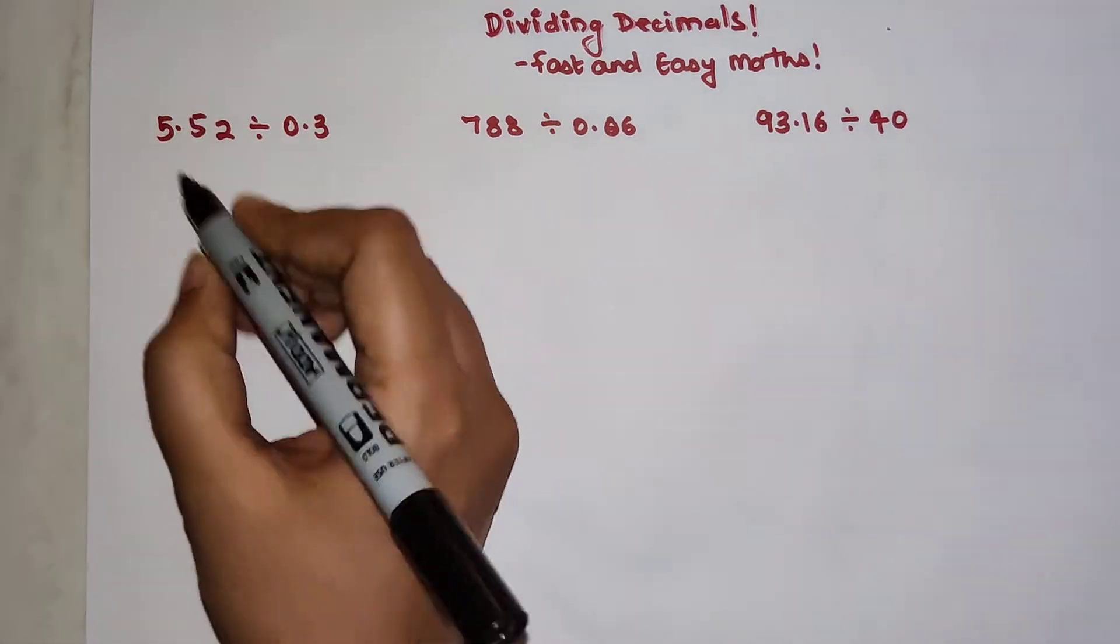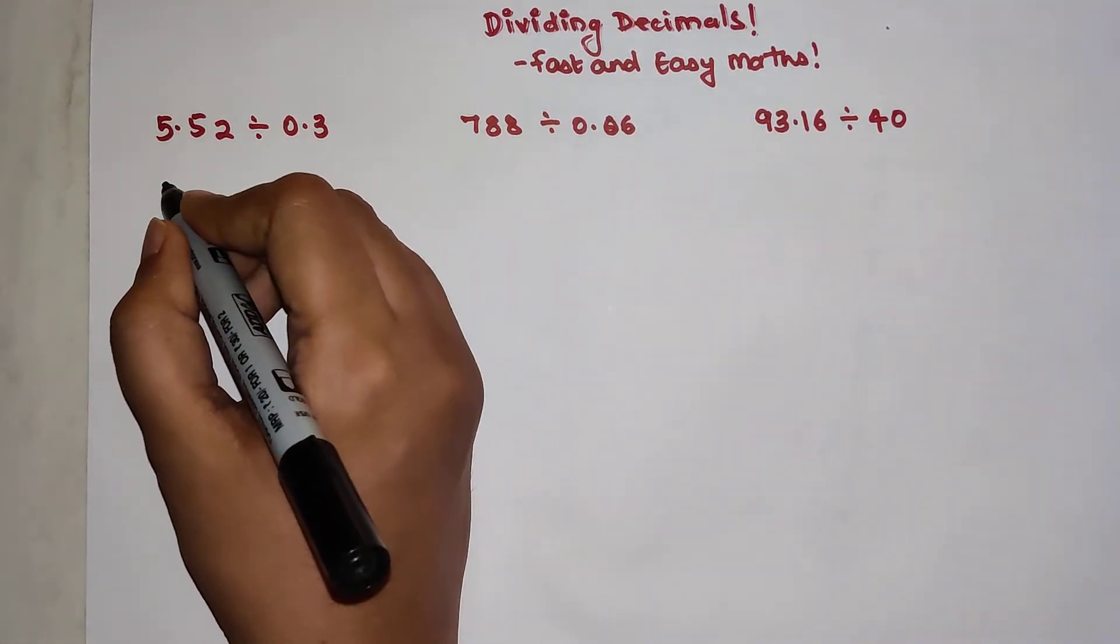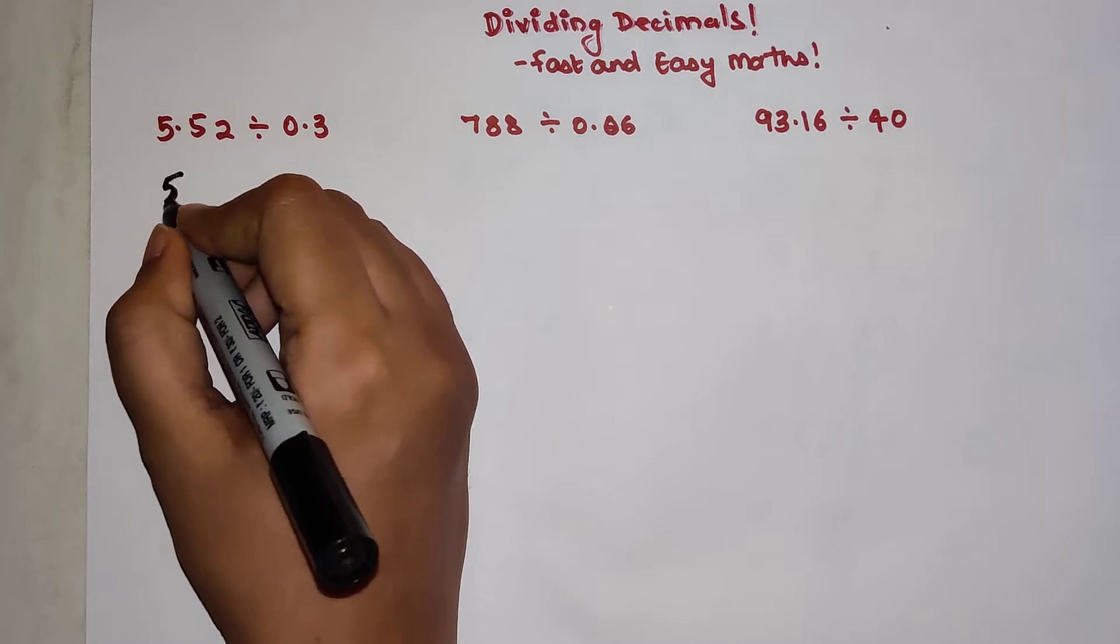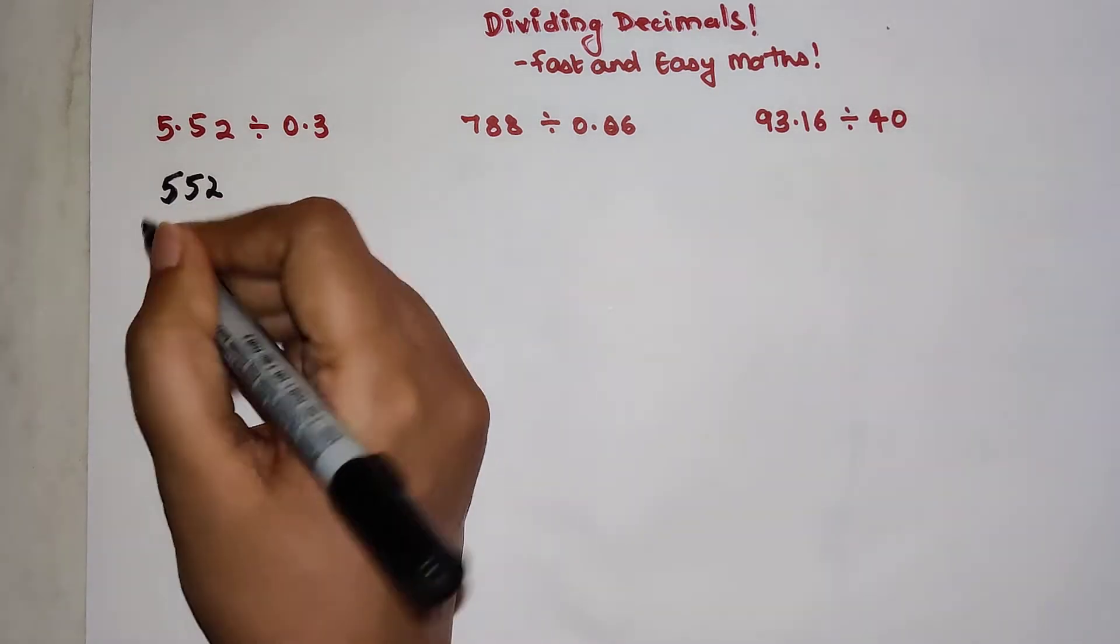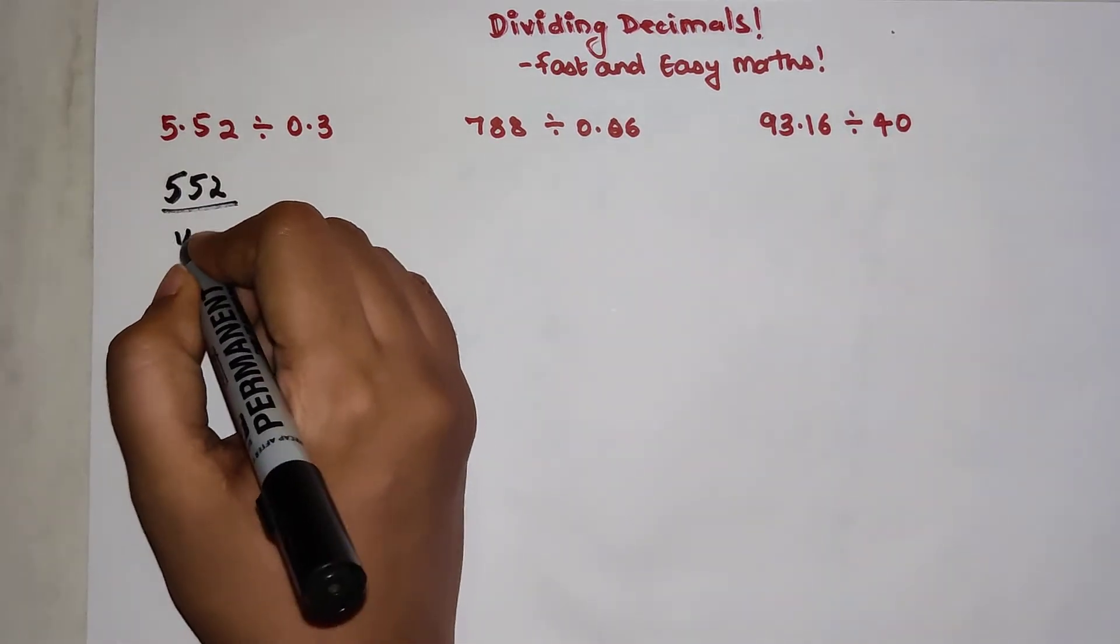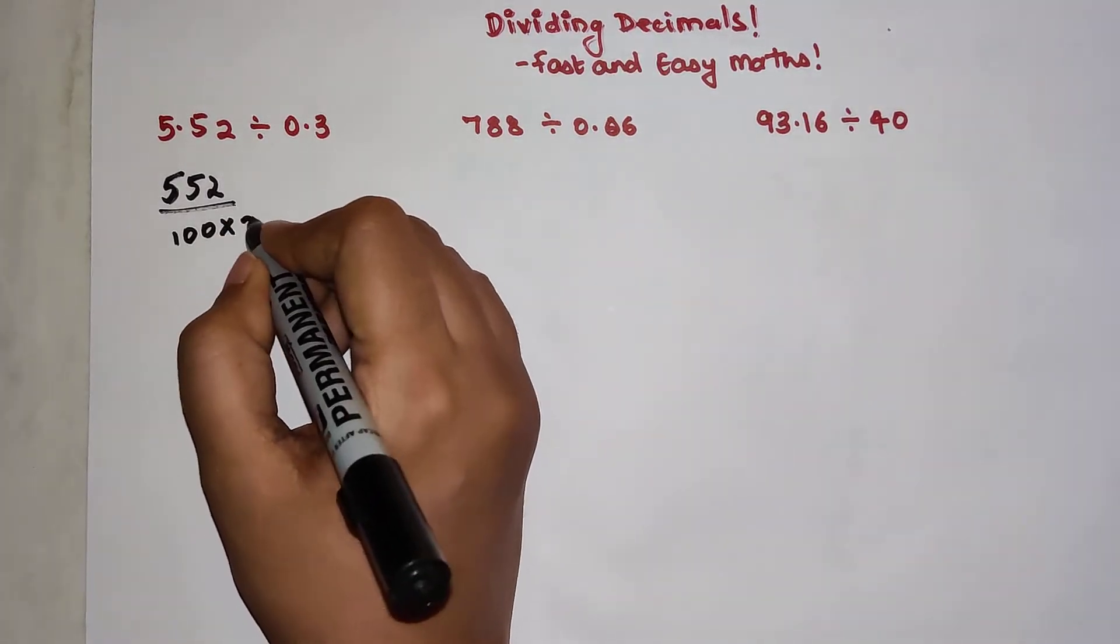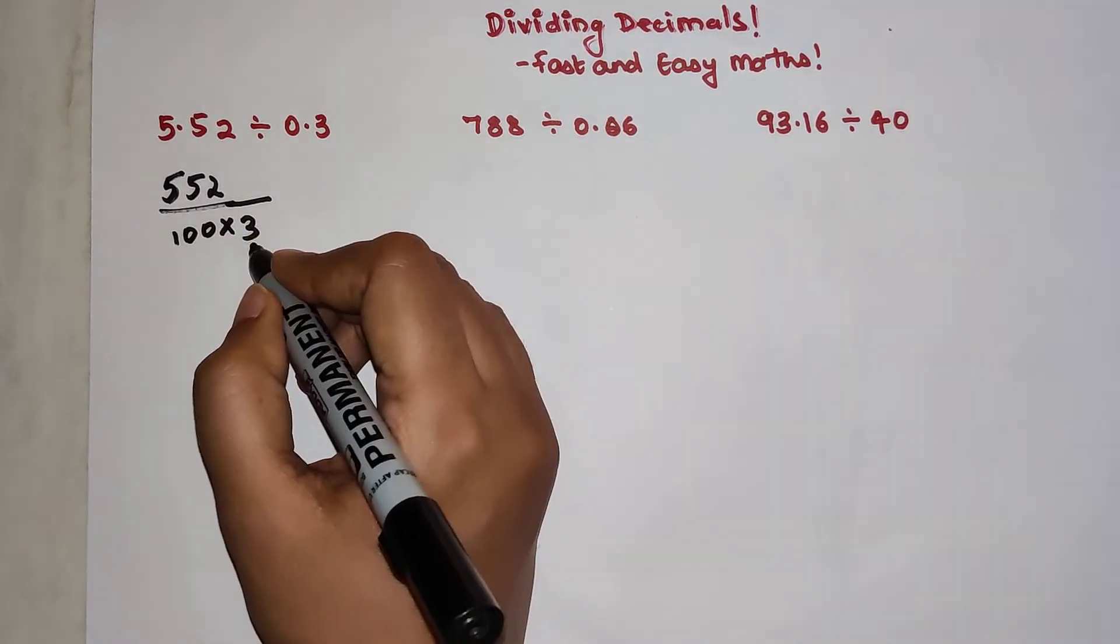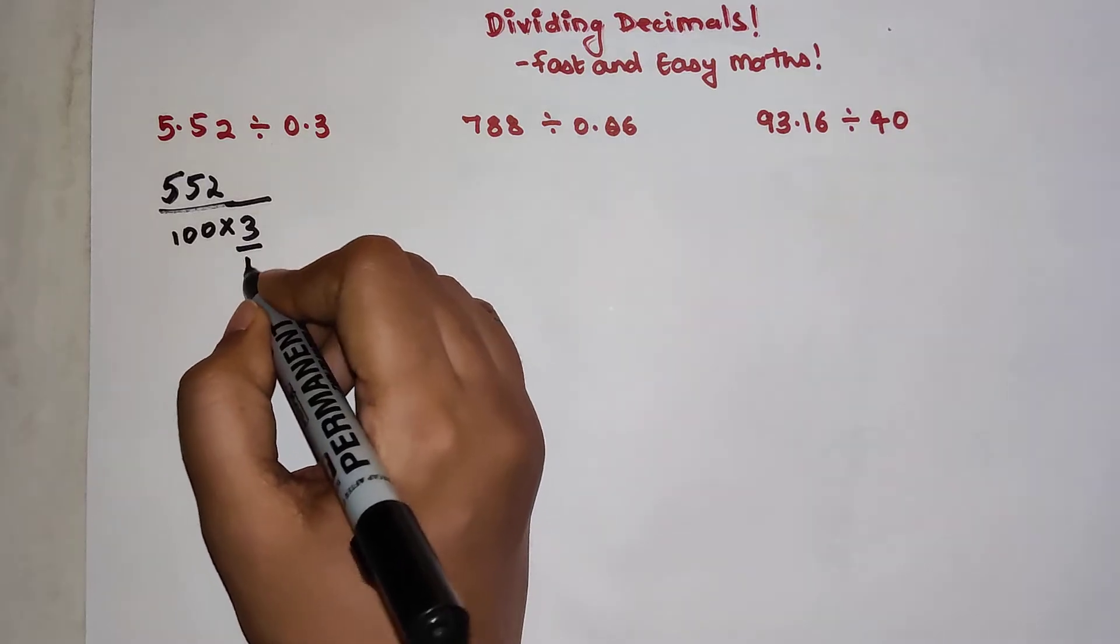Please understand, the trick to this one is just to get rid of the decimals first. So basically what I can write this as is 552 upon 100, and this is still divided by 3. And 0.3 will be written as 3 upon 10.